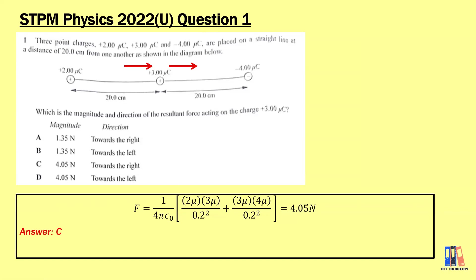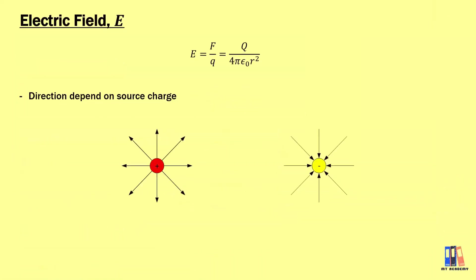Moving on to the second topic: the electric field. E is the force per unit charge, with formula E = Q over 4πε₀r². The direction of the electric field depends on the source charge — outward for a positive charge, or inward for a negative charge.